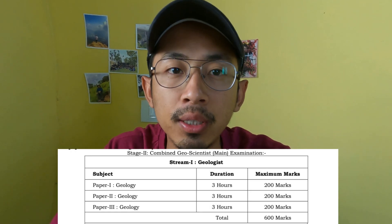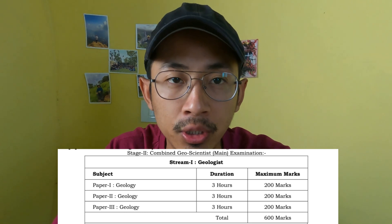Everyone preparing for this Geoscientist Examination should be aware of the main syllabus, which you can download from the UPSC website. The exam consists of three papers — Paper 1, 2, and 3 — which carry 200 marks each, and the examination duration is three hours. Unlike earlier, where there were four papers including an English paper with a cut-off marks requirement, that English paper has now been removed since the syllabus has been changed.